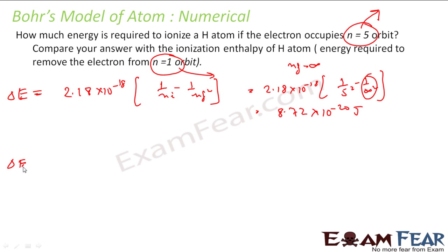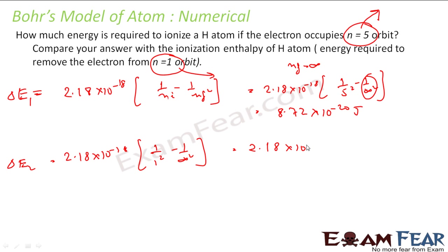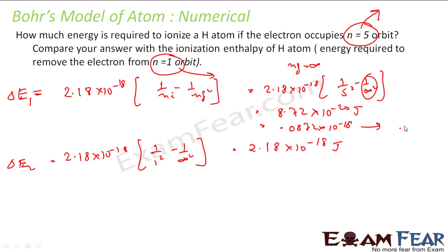In the second case, same formula: 2.18 into 10 to the power minus 18, n-initial is 1, so 1 by 1 squared minus 1 over infinity squared. Solving this gives 2.18 into 10 to the power minus 18. Making everything in terms of 10 to the power minus 18, the first case becomes 0.087 into 10 to the power minus 18. So we see the first value is much less than the second. Thus you can see that to remove the electron from the 5th orbit is easy; to remove it from the 1st orbit is difficult.